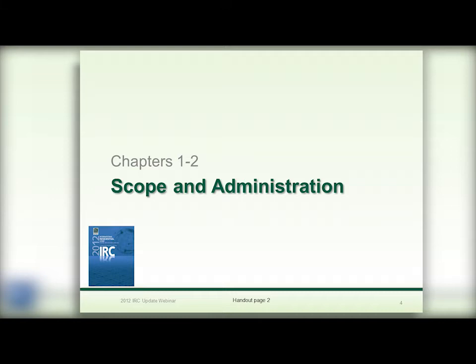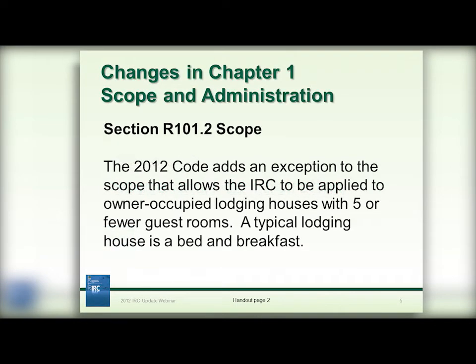The first area that we will be discussing are chapters one and two, chapter one being the scope and administration chapter. The first change is to the scope of the code. In this code change to R101.2, we've expanded the scope of the IRC a little bit. We now have an exception to the scope that allows the IRC to be applied to owner-occupied lodging houses when there are five or fewer guest rooms.